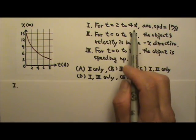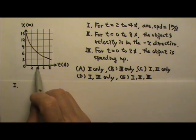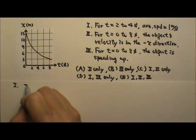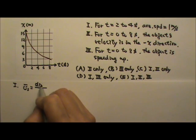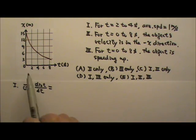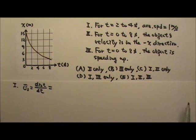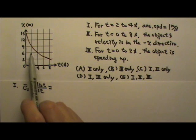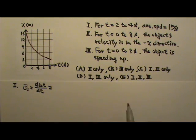For t equals 2 to 4 seconds, the average speed is 1 meter per second. For 2 to 4 seconds, the average speed is the distance traveled divided by the time. Now, in this case, the object is moving along an x-axis, just one dimensional motion. And from 2 to 4 seconds, the object moves from x equals 9 to x equals 6. So it goes from 9 to 6. There's no zigzagging, no curving around.